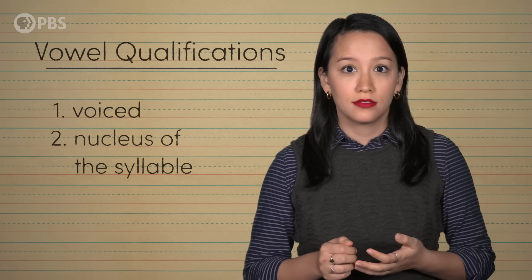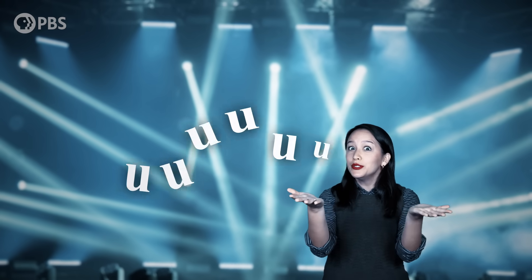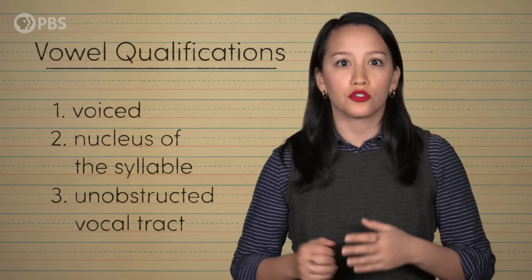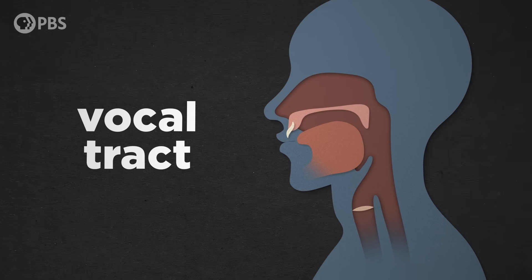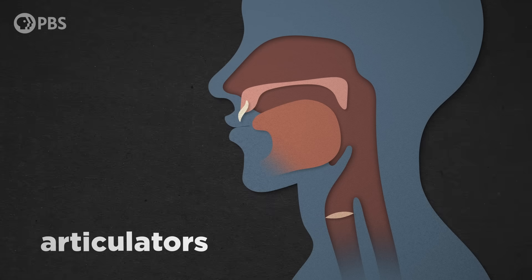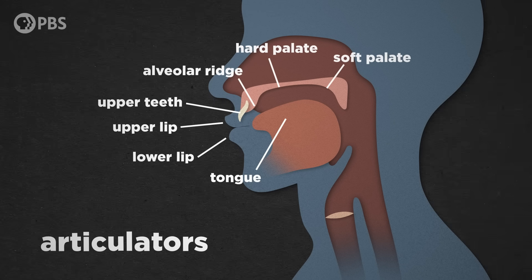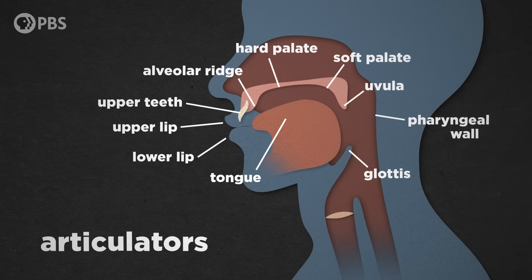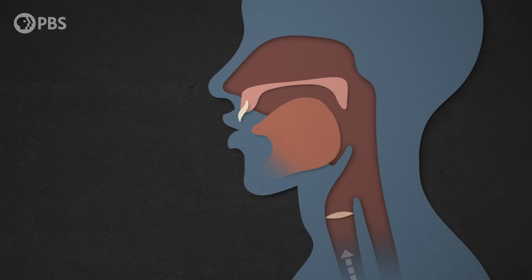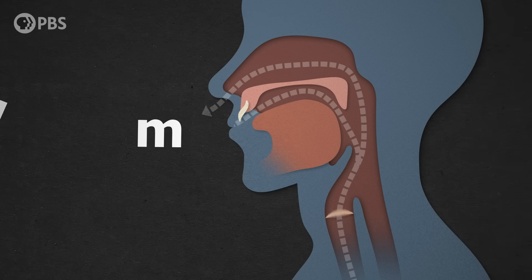It's the sound you'd sustain if you were singing the word. And third, it must be produced with an unobstructed vocal tract. Your vocal tract is basically the entire mechanism that shapes sounds, from your vocal cords to your nasal cavity. The different moving parts are known as articulators, and the main ones are the tongue, upper lip, lower lip, upper teeth, alveolar ridge, hard palate, soft palate, uvula, the pharyngeal wall, and the glottis. Vowel sounds are made by contorting these articulators into different shapes. However, if any of these articulators touch each other, the vocal tract is obstructed, and the resulting phoneme is considered a consonant.